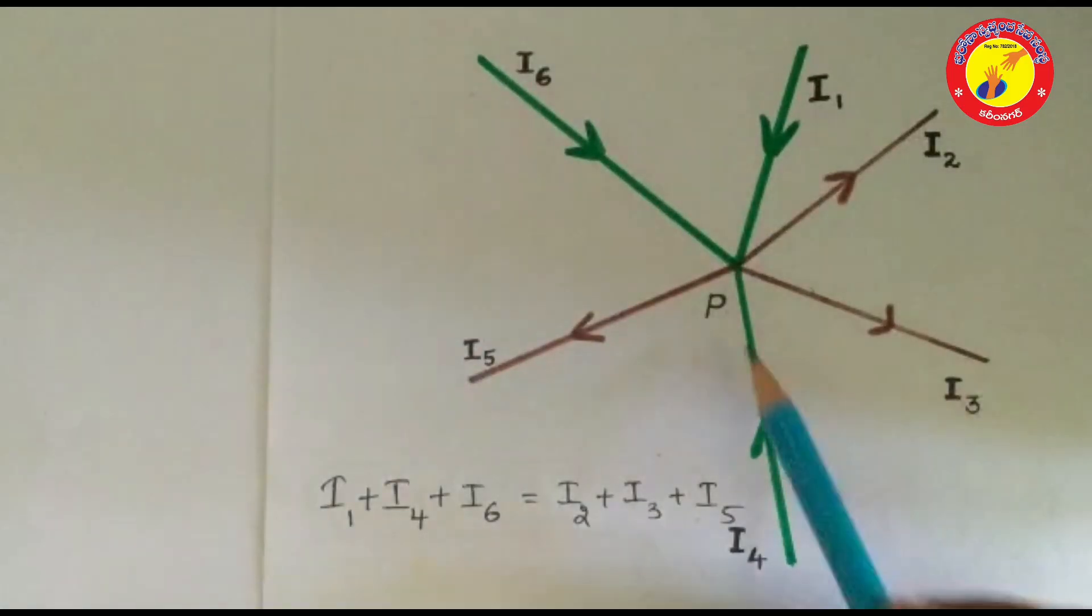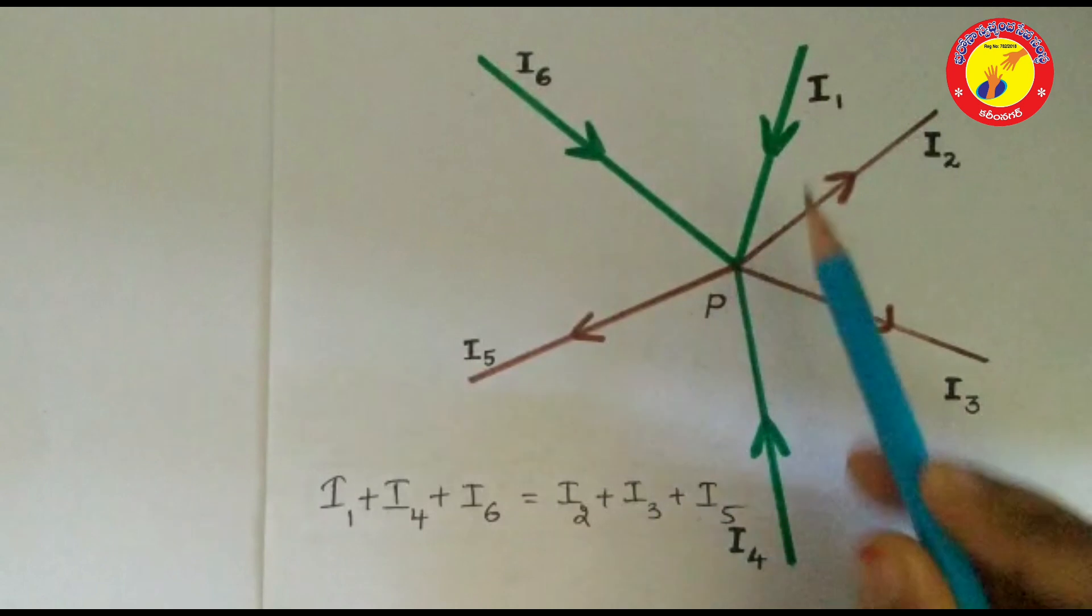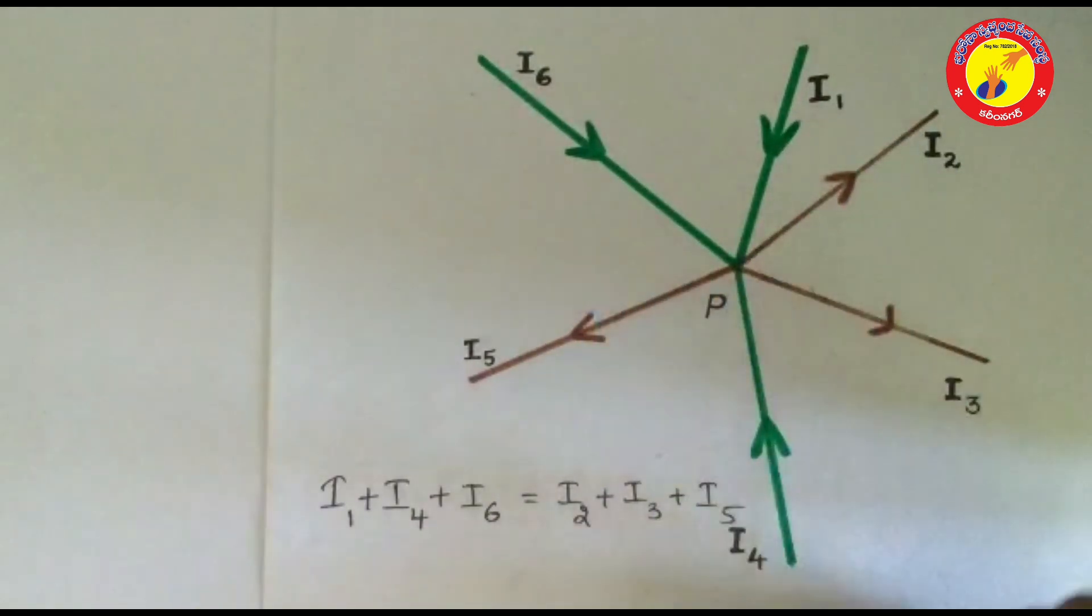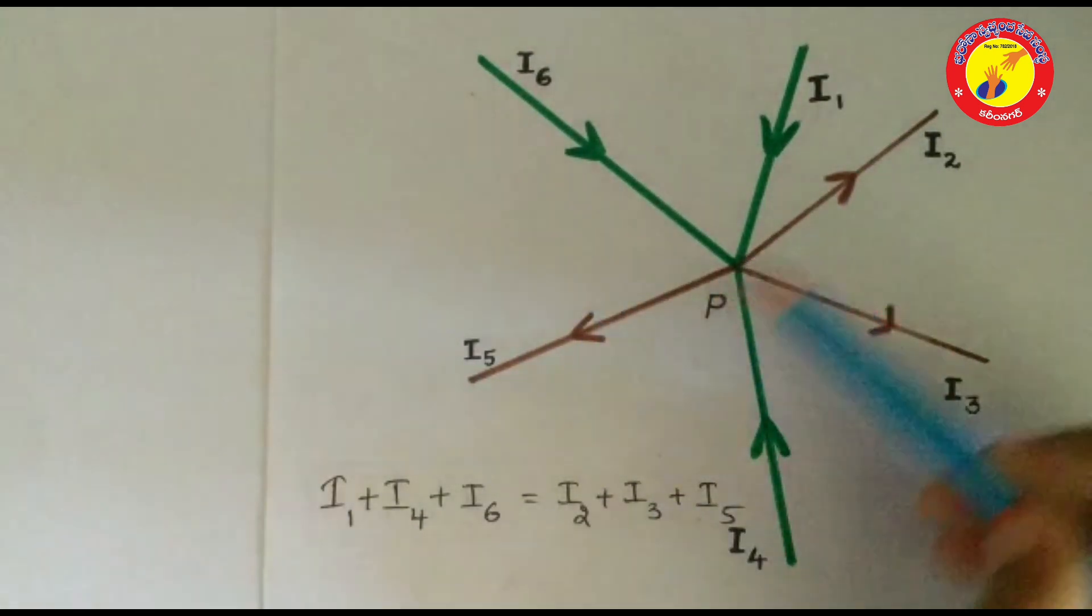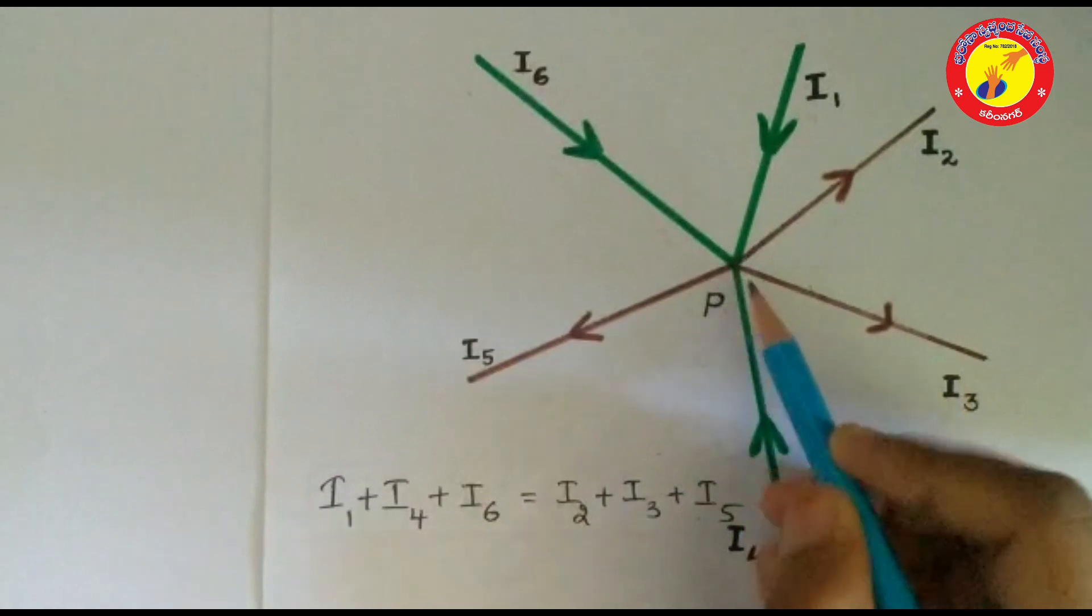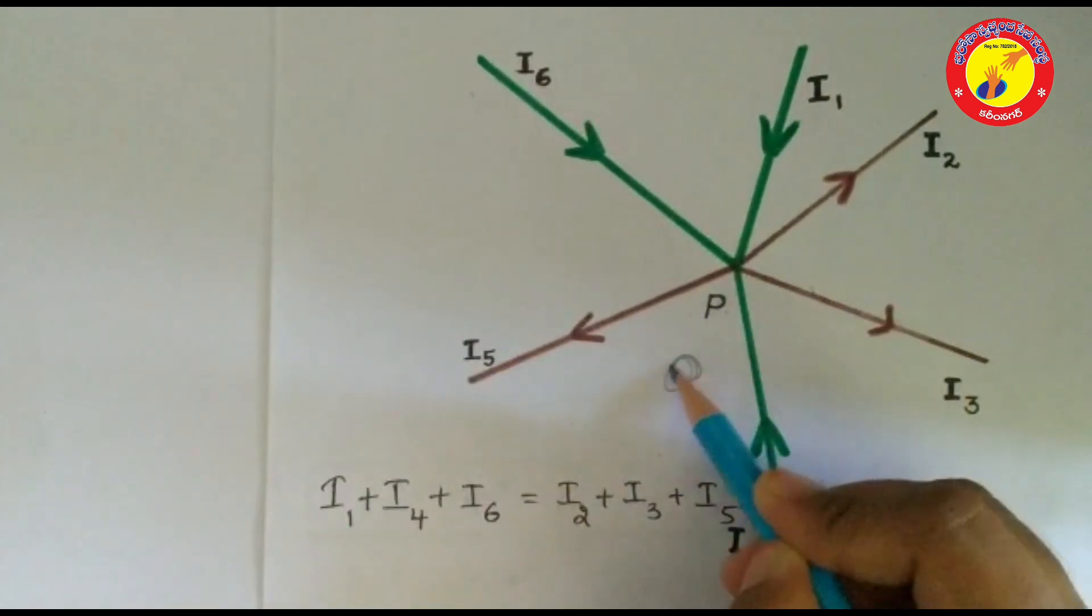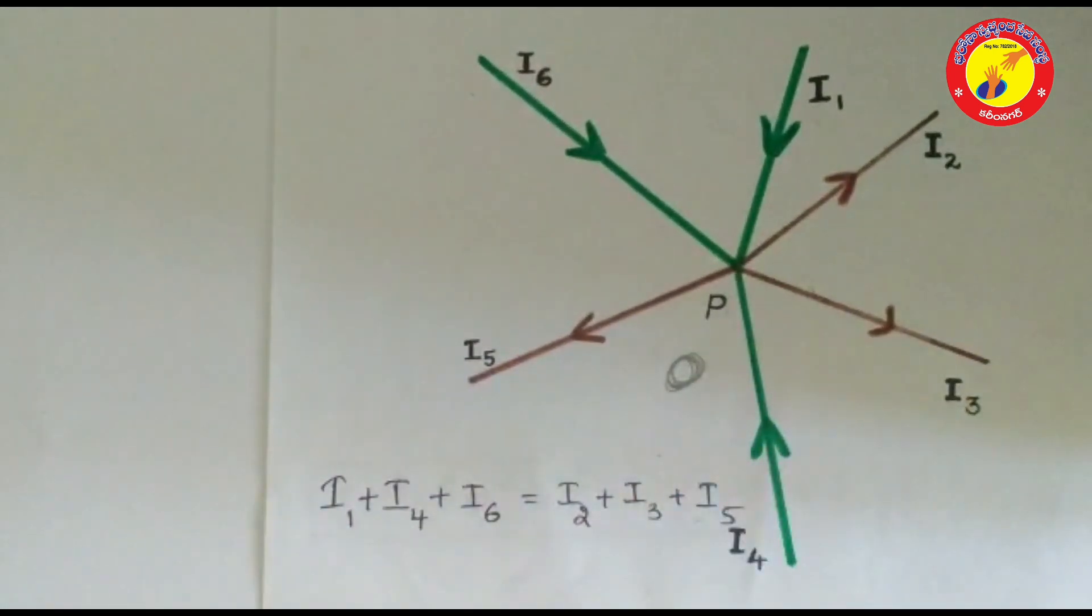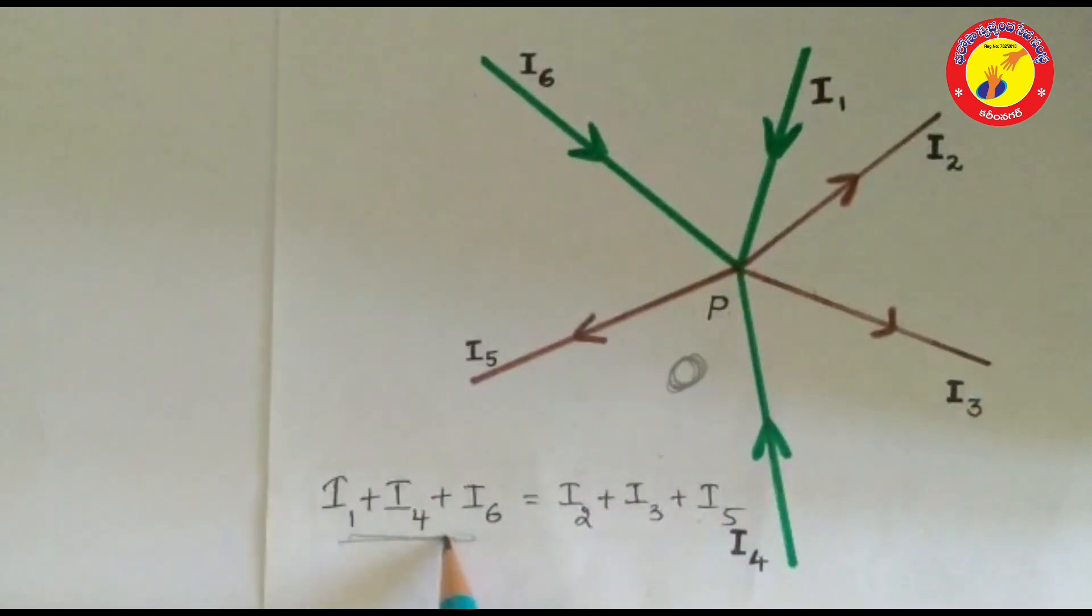Here, P is the junction. I1, I4, I6 are the currents entering into the junction, and I2, I3, I5 are the currents leaving the junction. The net electric charge at junction P is zero. At a junction point in a circuit where current can divide, the sum of currents into the junction must equal the sum of currents leaving the junction. This law is based on conservation of charge.